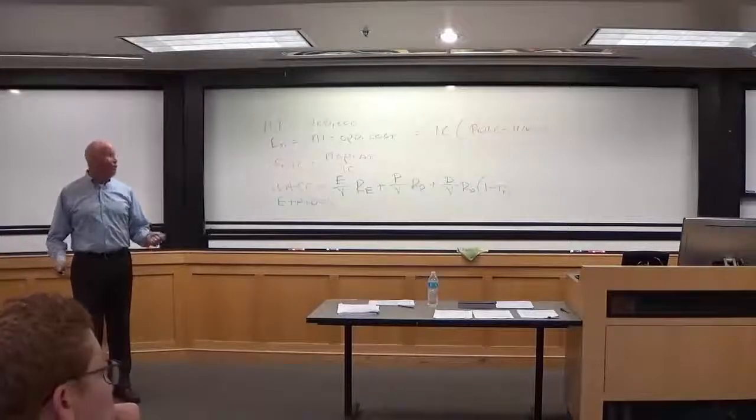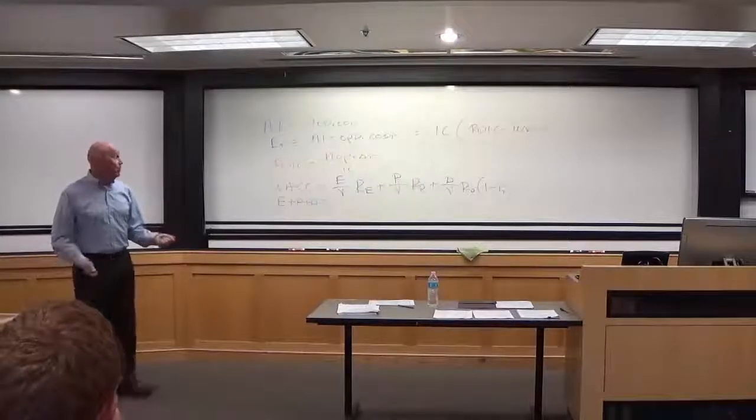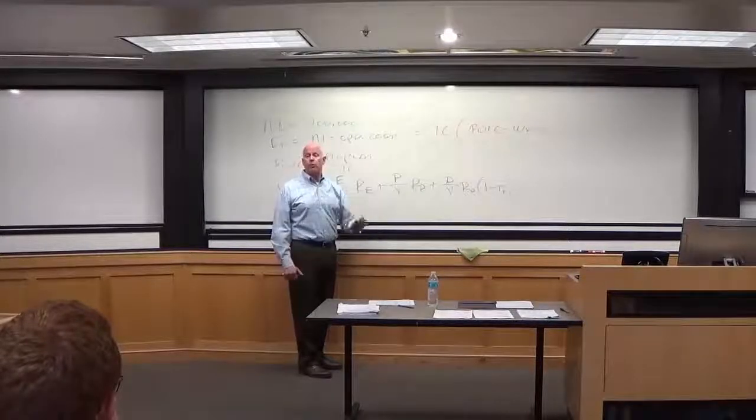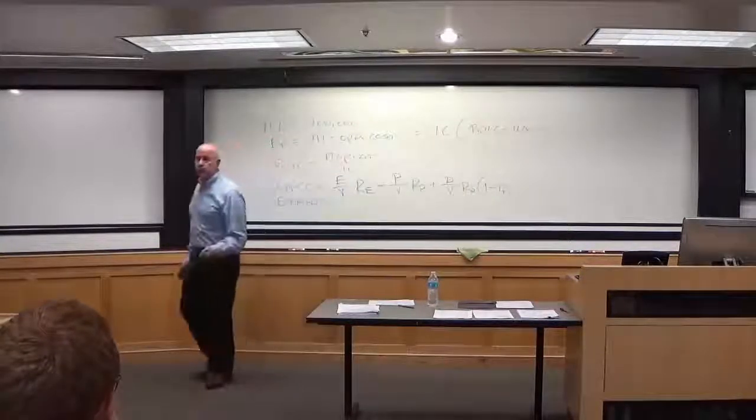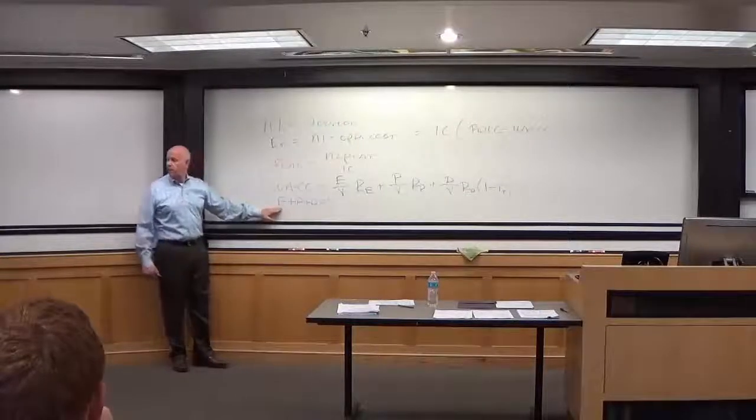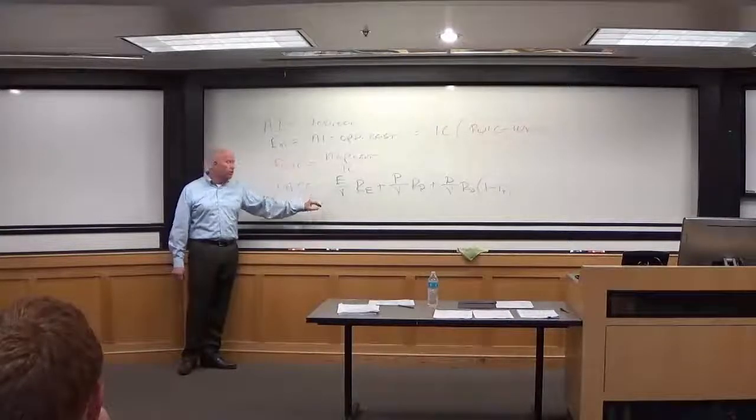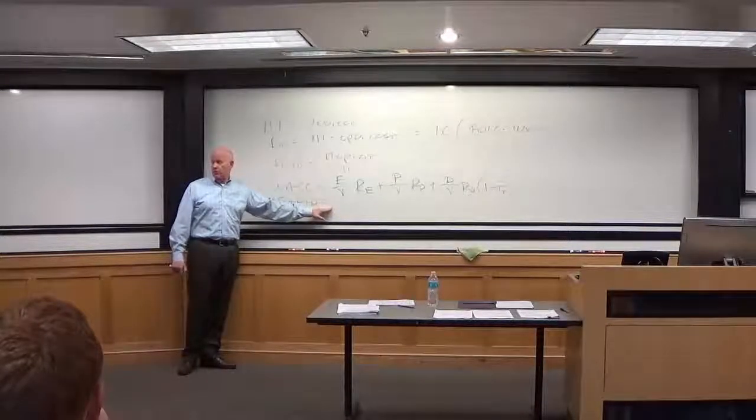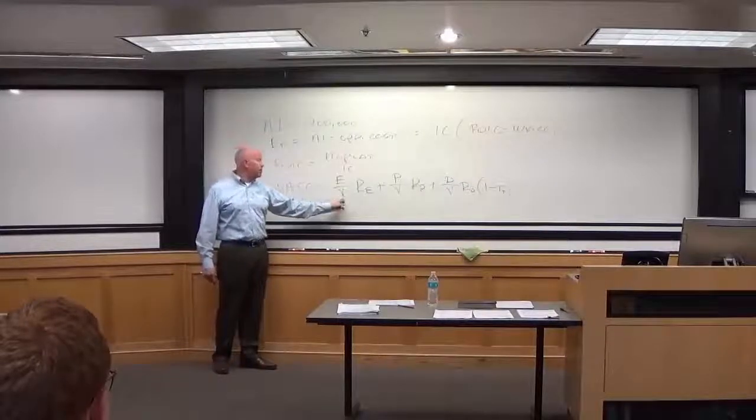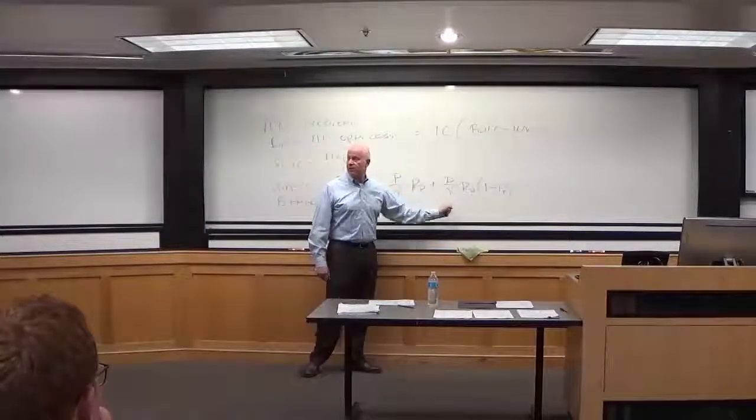P is the book value of the preferred stock. D is the book value of the company's long-term capital debt, not current liabilities because they're not capital debt. And T is the tax rate on taxable income. Each one of these fractions is the percentage of the company's capital structure represented by common, preferred, and debt combined.